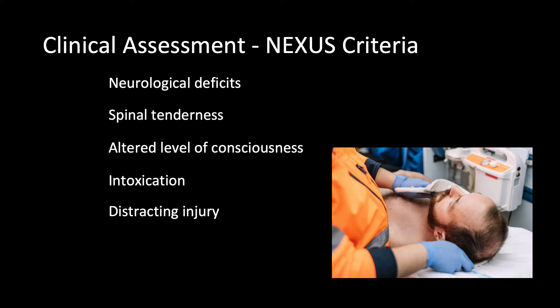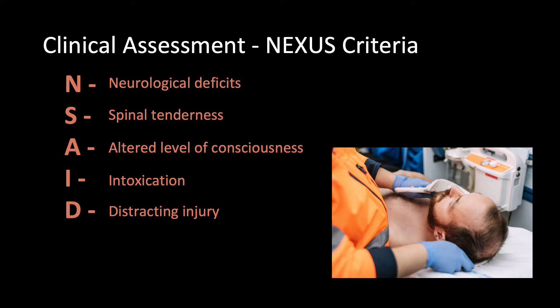When approaching a patient with a potential C-spine injury, we first use the clinical criteria to assess the patient. The Nexus criteria determines which patients require further imaging. If a patient has any of the following, they should get an X-ray of the cervical spine: neurological deficits, spinal tenderness, altered level of consciousness, intoxication, or distracting injury. We like to think of the mnemonic NSAID to help us remember these criteria.